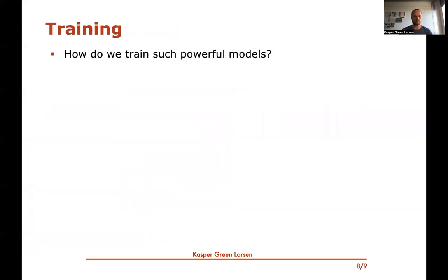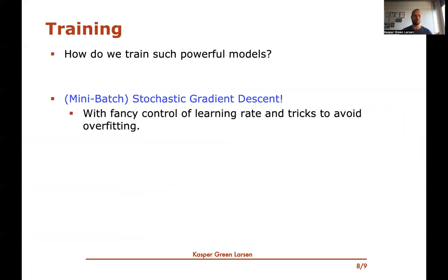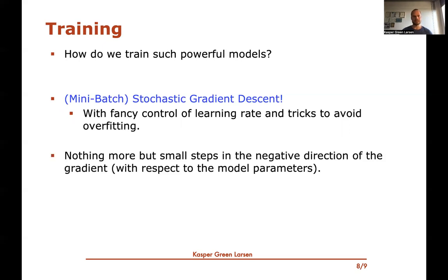So the question is how do we train these powerful neural networks? The short answer is: you already know the algorithm. The basic algorithm is mini-batch stochastic gradient descent — that's essentially the main tool you need. In practice there are also smart ways of controlling the learning rate and tricks to avoid overfitting, but at the bottom of it all it's just mini-batch stochastic gradient descent, taking small steps in the negative direction of the gradient with respect to model parameters. It's a surprisingly simple algorithm for training something so powerful, but you need enormous amounts of data to make it work.